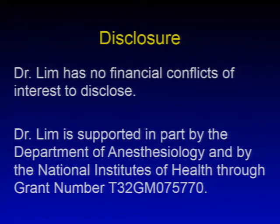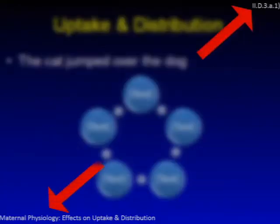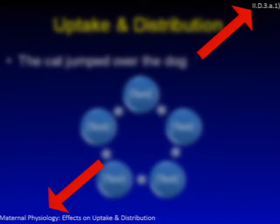I have no financial conflicts of interest to disclose. I am supported in part by this department and also through a grant by the NIH. I just want to orient you to the slides. In the upper right-hand corner for all the slides you'll see a series of numbers that look like an outline citation, and on the bottom left you'll see text describing what exactly we're talking about. By the end of this, I will have covered everything in this first part of OB that is expected of you in the content outline provided by the ABA.